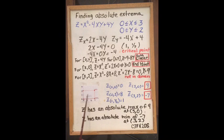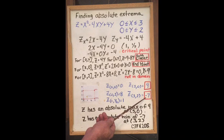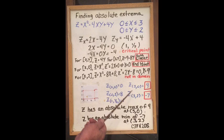We evaluate z at the origin, z at (0, 2), z at the critical point (1, 1/2), z at (3, 0), and z at (3, 2), plugging each into the equation. Noticing that -7 is the lowest and positive 9 is the highest. Therefore, z has an absolute maximum of 9 at the point (3, 0), and z has an absolute minimum of -7 at the point (3, 2). That's your answer.